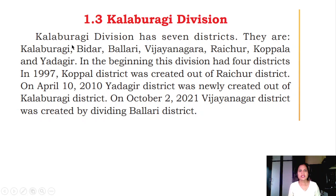Kalburgi Division has 7 districts. They are Kalburgi, Bidar, Ballari, Vijayanagar, Raichur, Kopla, and Yadgir.